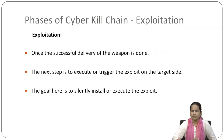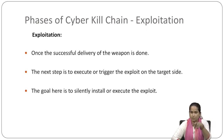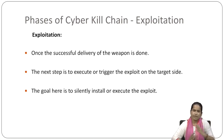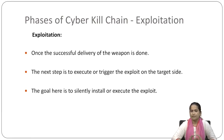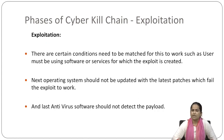The next stage is exploitation. Once successful delivery of the weapon is done, it means executing or triggering the exploit on the target side. The goal is to silently install or execute the exploit — silently installing the code and executing it to generate the exploit in the organization. There are certain conditions that need to be matched for this to work.